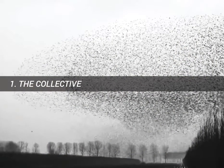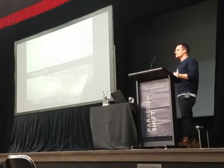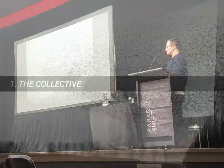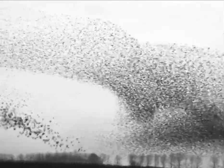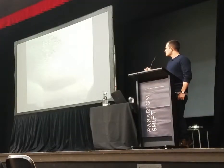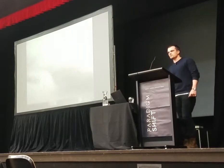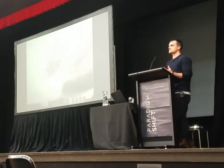The first paradigm of intelligence in nature is what I call the collective. The collective has to do with the way that complex patterns and behaviors emerge in nature based on the interaction of a large number of relatively simple organisms. Here you see a flock of birds called starlings performing an act called the murmuration.